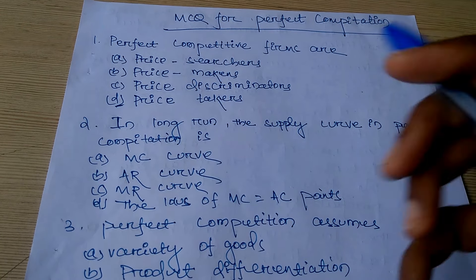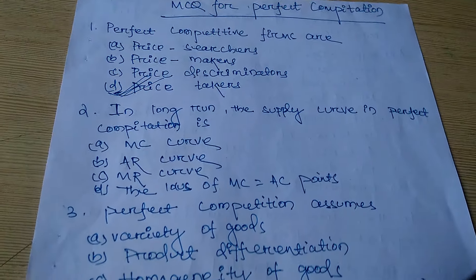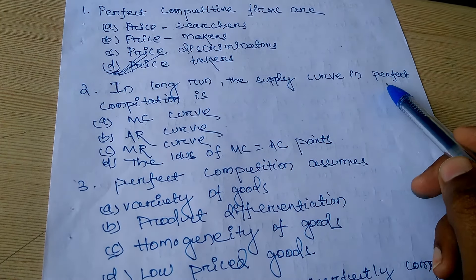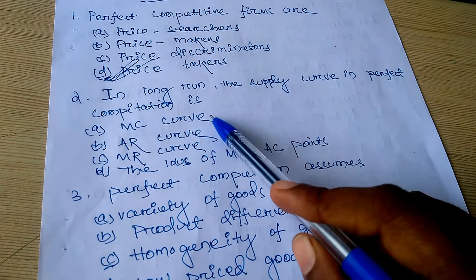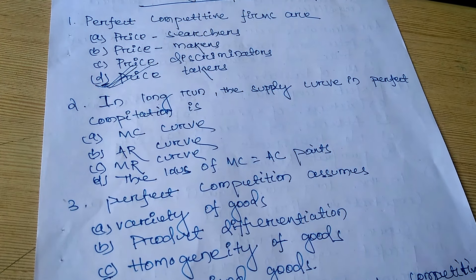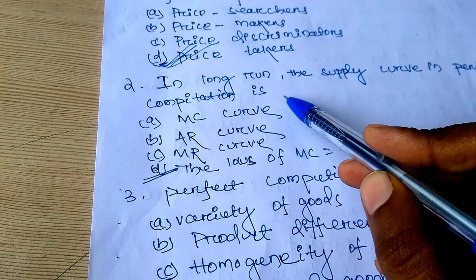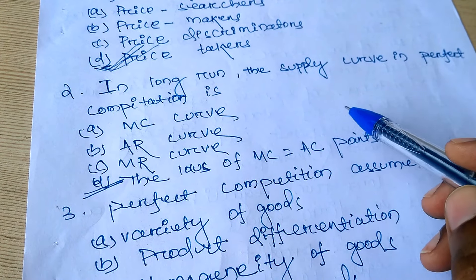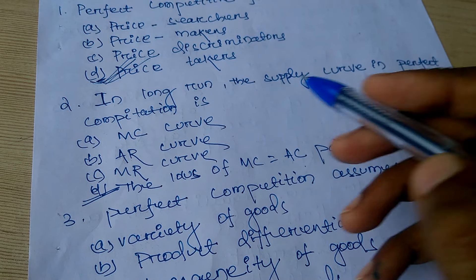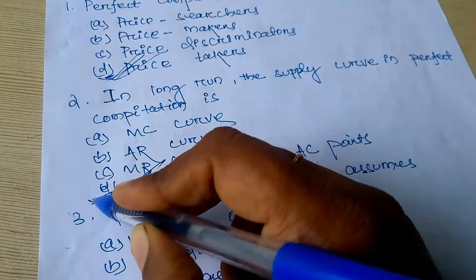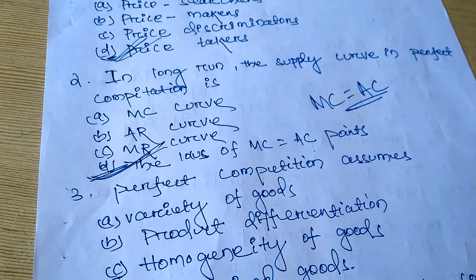Question: In perfect competition, firm is the price taker and industry is the price maker. In the long run, the supply curve in perfect competition is the locus of MC equal to AC points. So you have to take the point where MC equals AC — that is the point of the supply curve in perfect competition, because so much flexibility is there in the market.